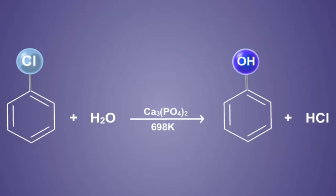The reaction is: chlorobenzene plus H2O in the presence of Ca3(PO4)2 at 698 Kelvin gives phenol plus HCl.